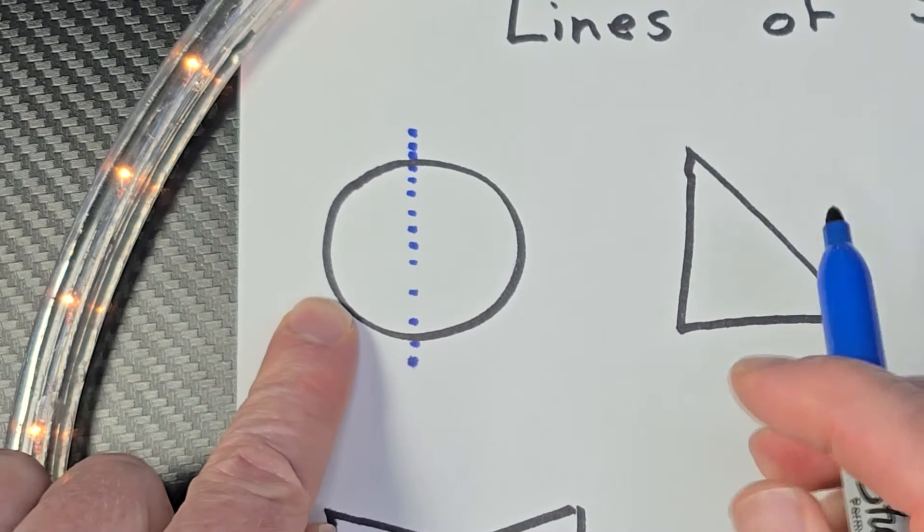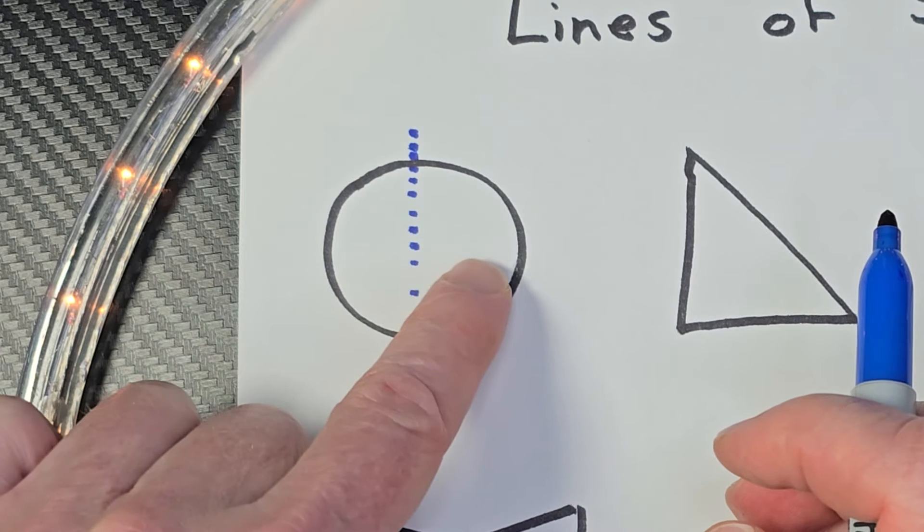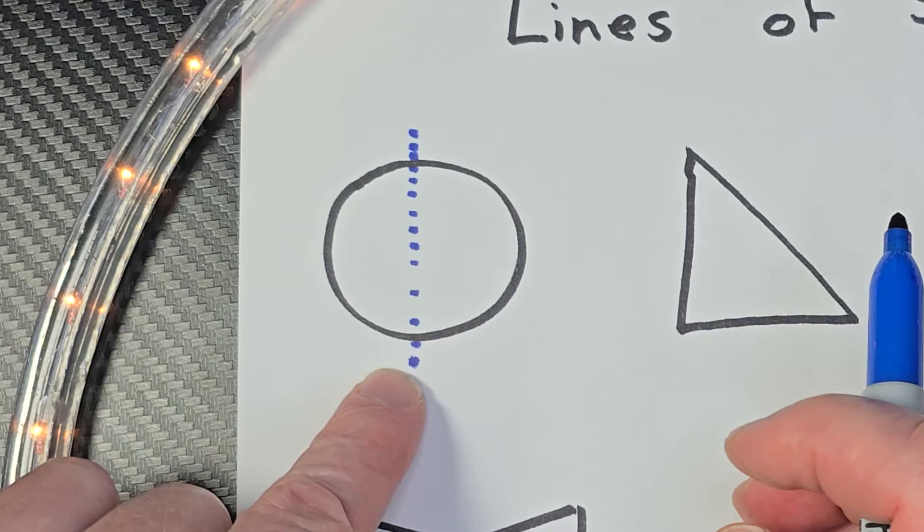So this part right here, if I were to take that part off, that would be the same shape as this shape right here. So that is called the line of symmetry.